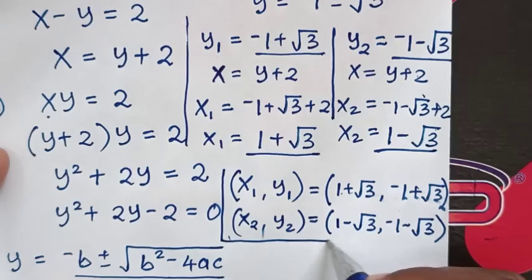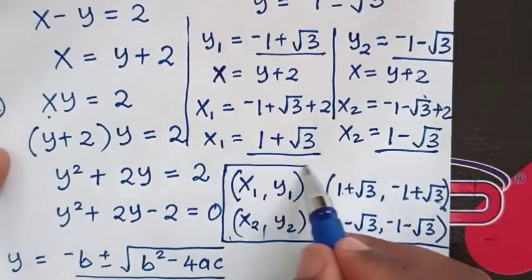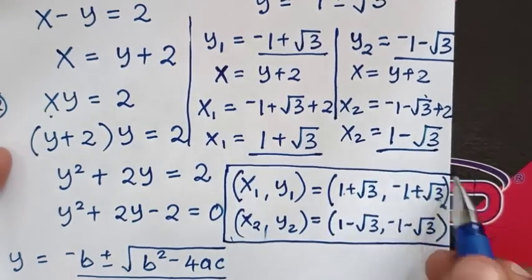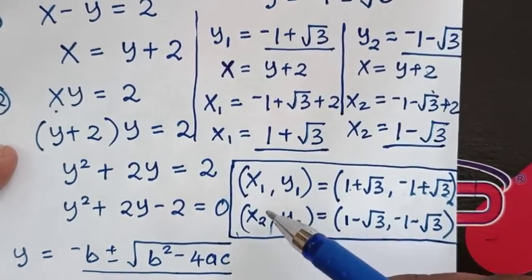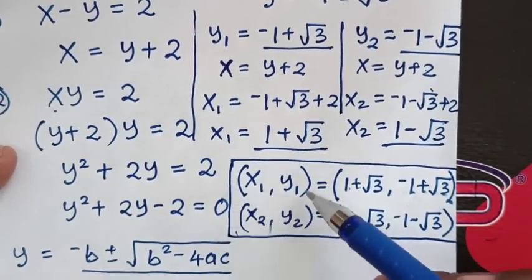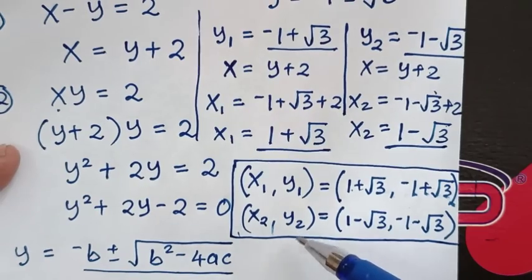So this is the conclusion for our problem — we have two solutions: x1 comma y1, and x2 comma y2.